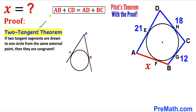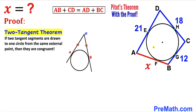Let's recall the two tangent theorem: if two tangent segments are drawn to a circle from the same external point, then they are congruent. Applying this here: segment AF is congruent to segment AE, segment DE is congruent to segment DH, segment CH is congruent to CG, and segment BG is congruent to segment BF.